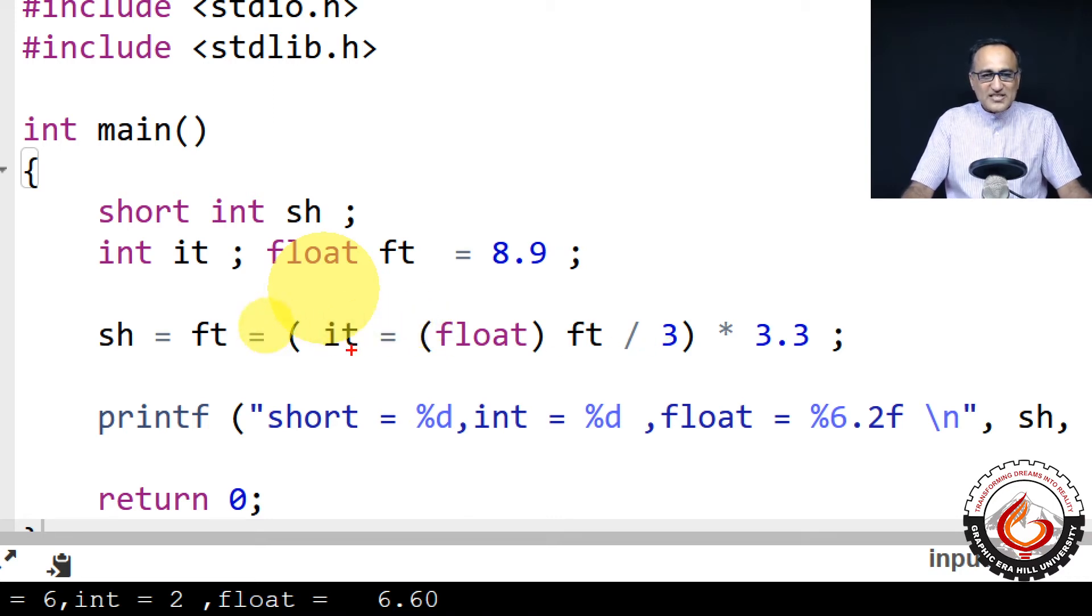Now, since it is an integer variable, it cannot hold the point nine part. So it becomes only two.